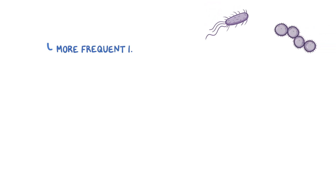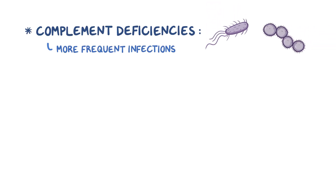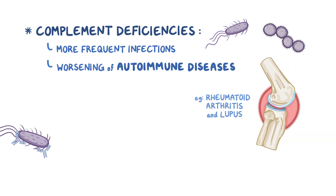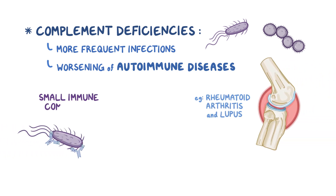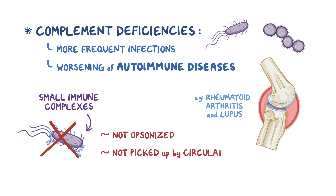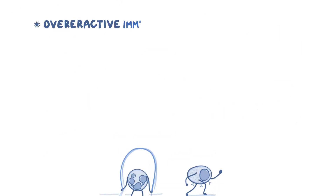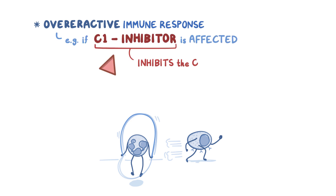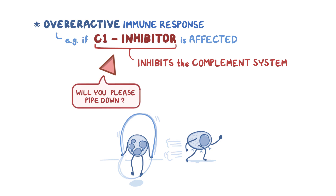In addition to more frequent infections, complement deficiencies can also lead to worsening of autoimmune diseases like rheumatoid arthritis and lupus. That's because small immune complexes don't get opsonized or picked up by circulating immune cells, and they deposit in various tissues around the body. Complement deficiencies can also cause an overactive immune response if the affected protein is something like a C1 inhibitor, which is a complement protein that normally inhibits the complement system — particularly helpful when it's time for the complement system to wind down.